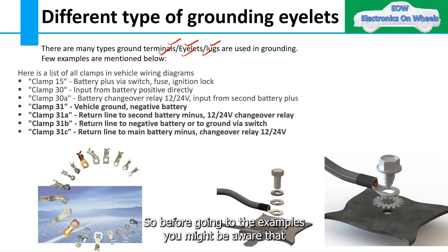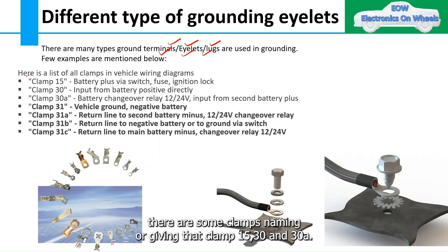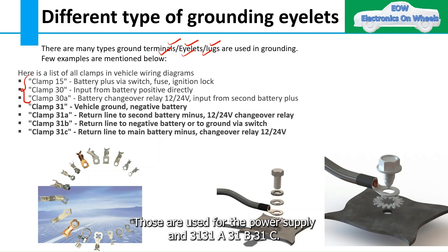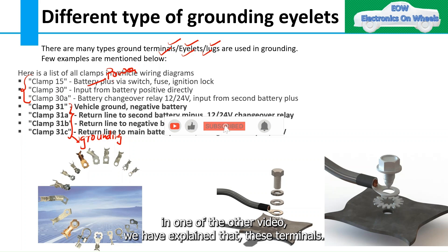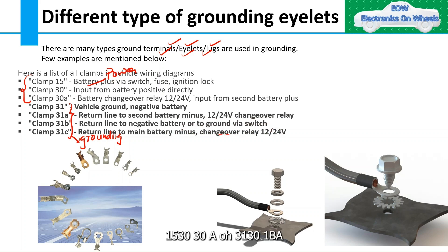Before going to the examples, you might be aware that there are some clamp naming conventions: clamp 15, 13, and 38 are used for the power supply, and 31, 31a, 31b, 31c are used for grounding. In one of our previous videos we explained that these terminals 15, 30, 30a, 31, 31b, and 31c came from certain standards.